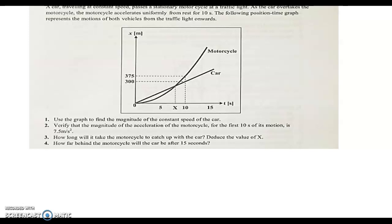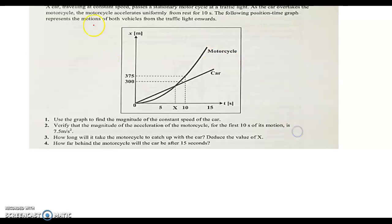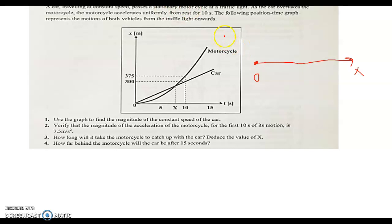We will use the graph to find the magnitude of the constant speed of the car. Representing the case using a space reference, you can see that both cars started moving from the origin because their initial position is x equals 0. This is the x-axis and the origin of the space reference. Both vehicles started moving from the same position but differently — the car moved at constant speed, so V car is constant.